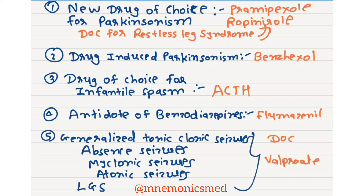Drug of choice for infantile spasm is ACTH. Antidote for benzodiazepines is Flumazenil.